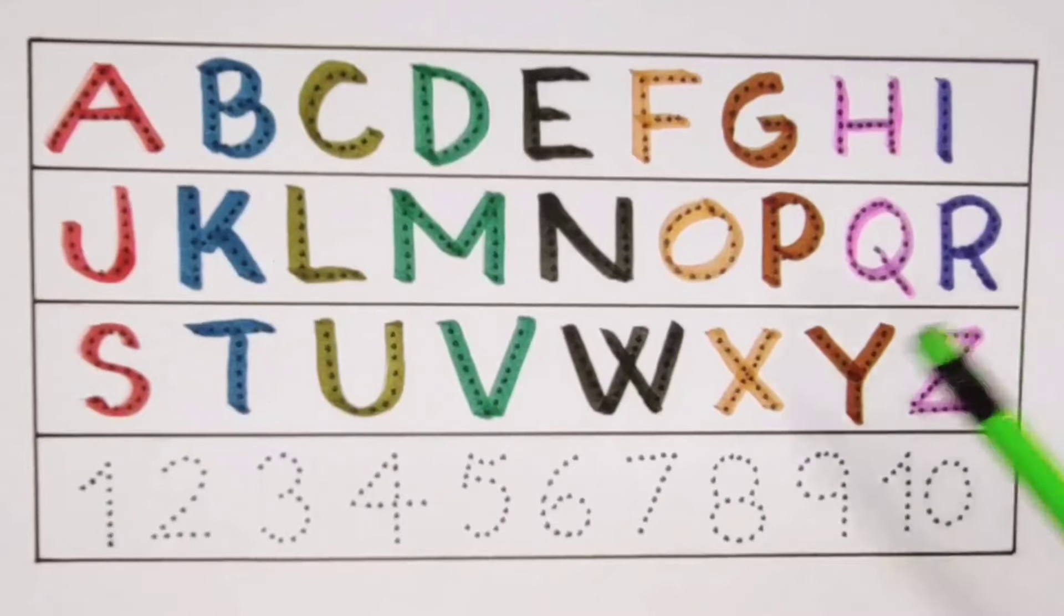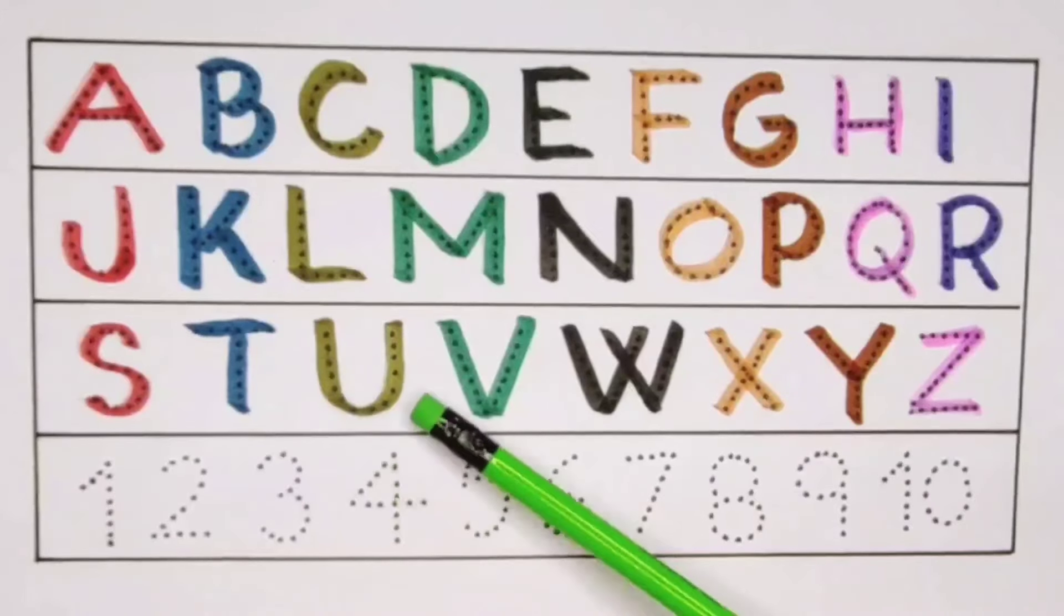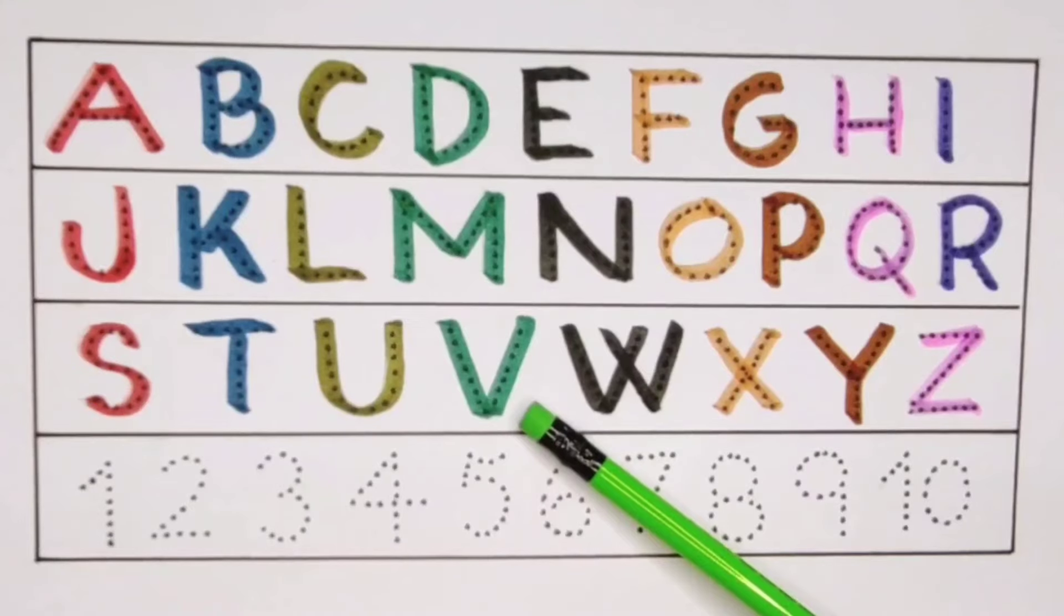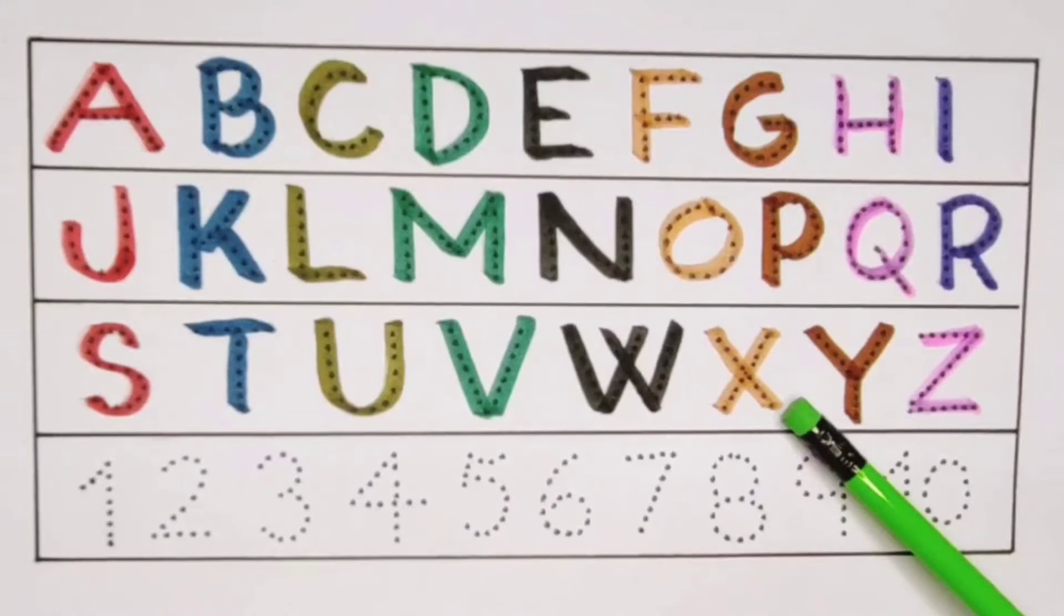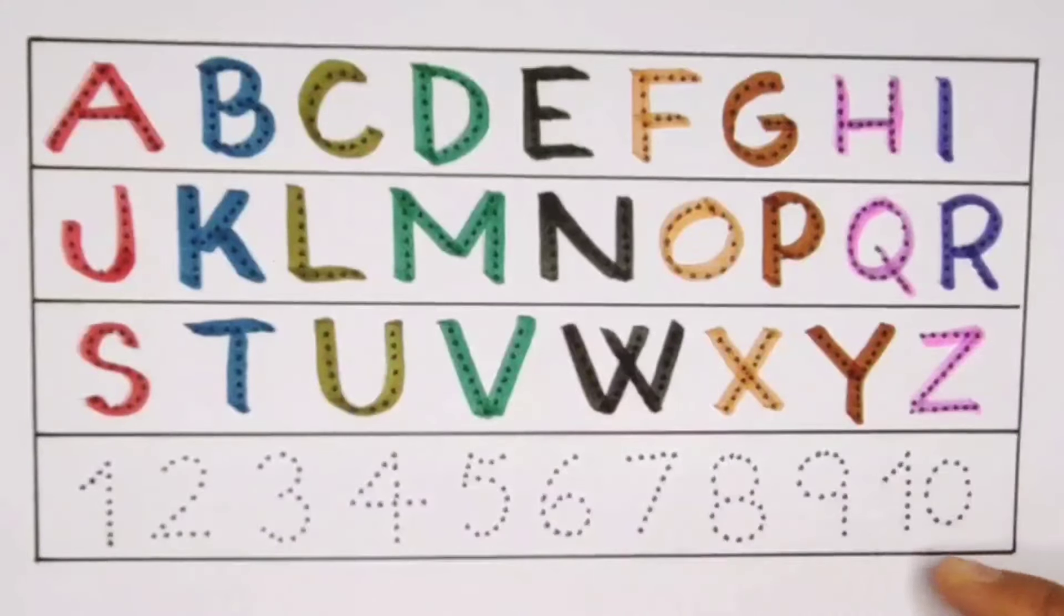S for sun, T for time, U for umbrella, V for van, W for watch, X for x-ray, Y for york, and Z for zoo. Now, let's learn the numbers counting 1 to 10.